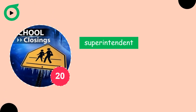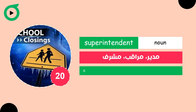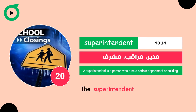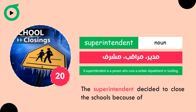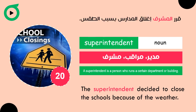Superintendent. A superintendent is a person who runs a certain department or building. The superintendent decided to close the schools because of the weather.